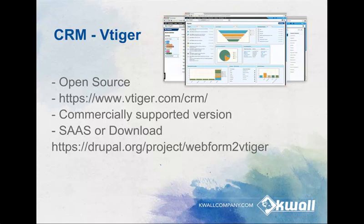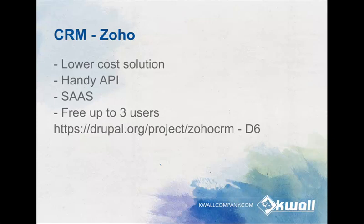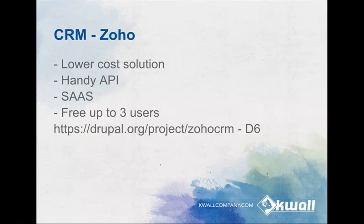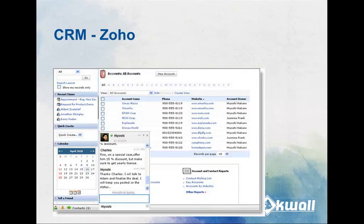Another one is vTiger, which is more truly open source — you just go there, download it, and there is still a commercially supported version if you don't want to manage it yourself. It has Drupal modules so you can plug it right in, and if somebody fills out your contact form it'll pass it into vTiger. One of the final ones is Zoho, which is cheaper and really focused more on developers who are into APIs and pulling in data. It's free up to three users and does the same stuff as the others, though one downfall is there's only a Drupal 6 module, so you might have to do some work to get it connected.